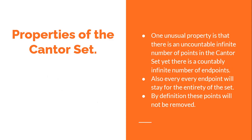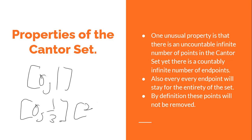There are two different types of infinity within the set itself. We set it up as the interval from zero to one, then went to zero to one-third and two-thirds to one. There's an infinite number of points within the Cantor set itself, but each of the endpoints — zero, one-third, two-thirds, one, and so on — forms a countable number of distinct endpoints. How we construct it means each endpoint will never be removed from the set, since we're always removing the middle third.